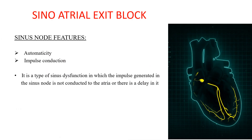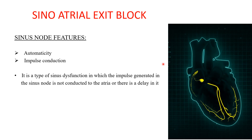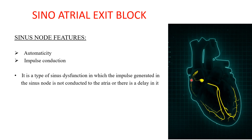As discussed, the sinus node has two properties: automaticity and impulse conduction. Sinoatrial exit block is a type of sinus dysfunction in which the impulse generated in the sinus node is not conducted to the atria, or there is a delay in that conduction. The problem lies in whether the sinus node is firing, or whether it is firing but not conducting downward into the atria.